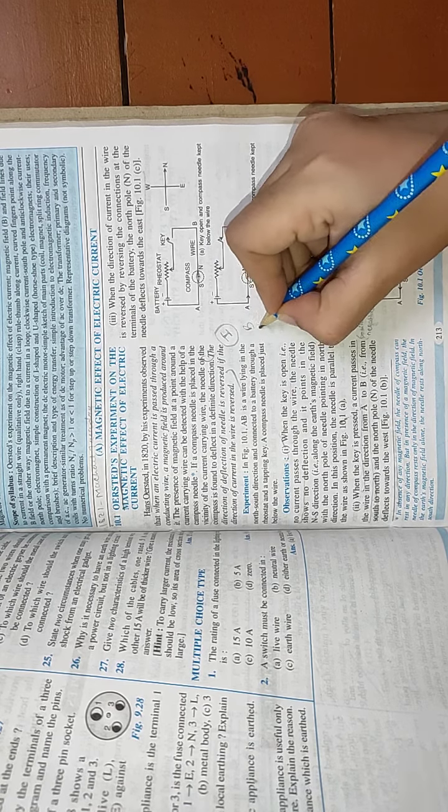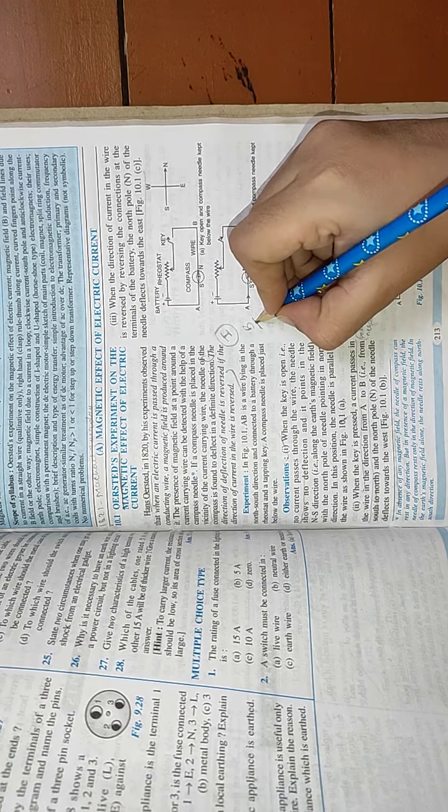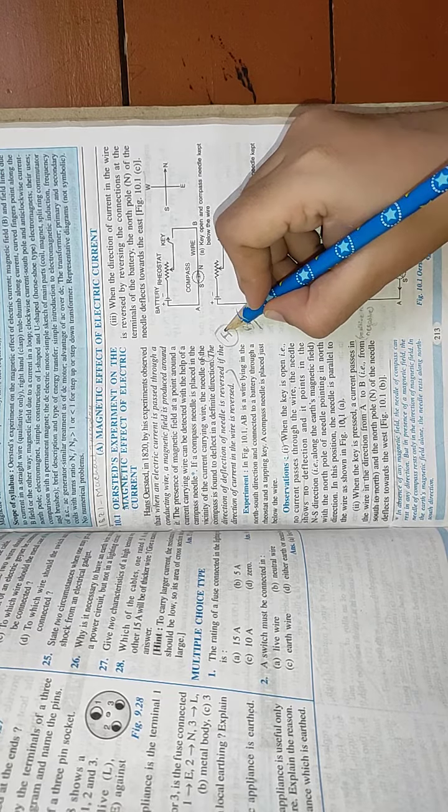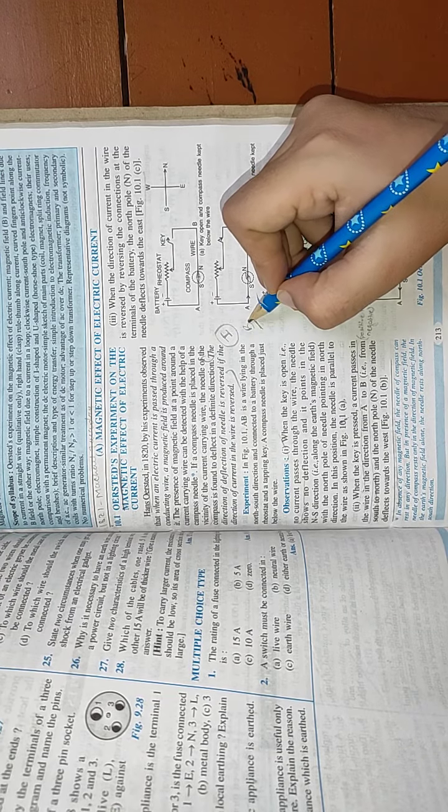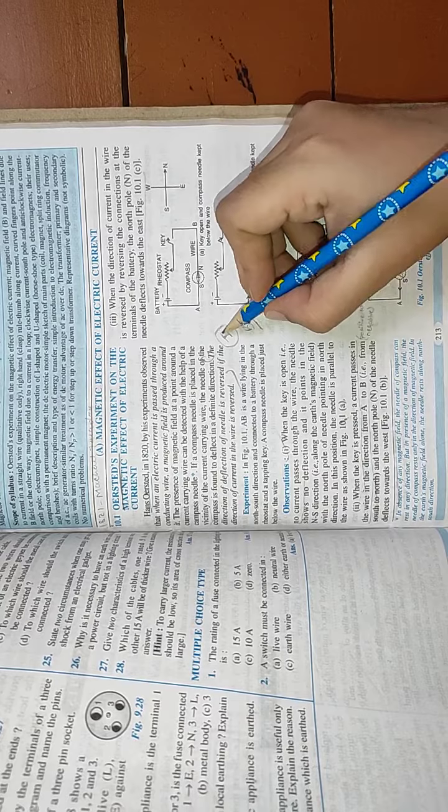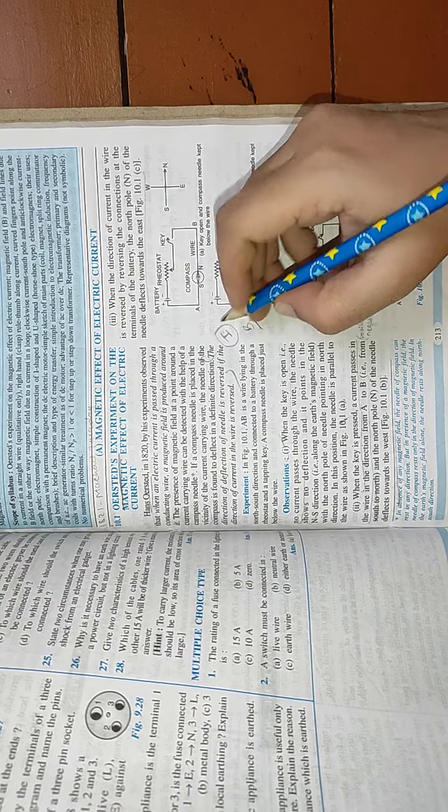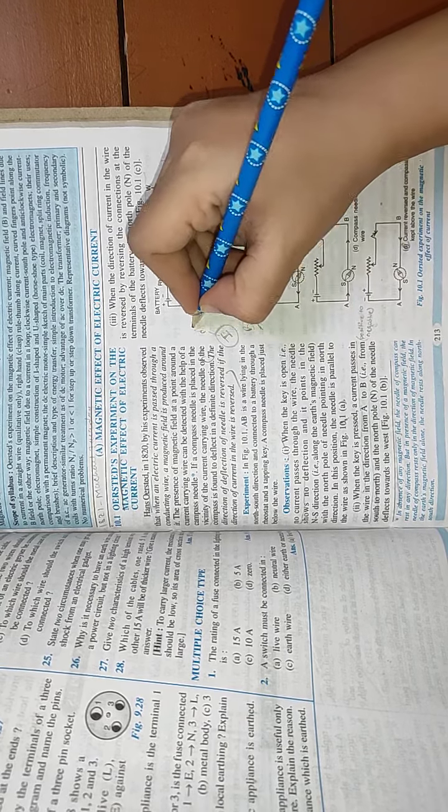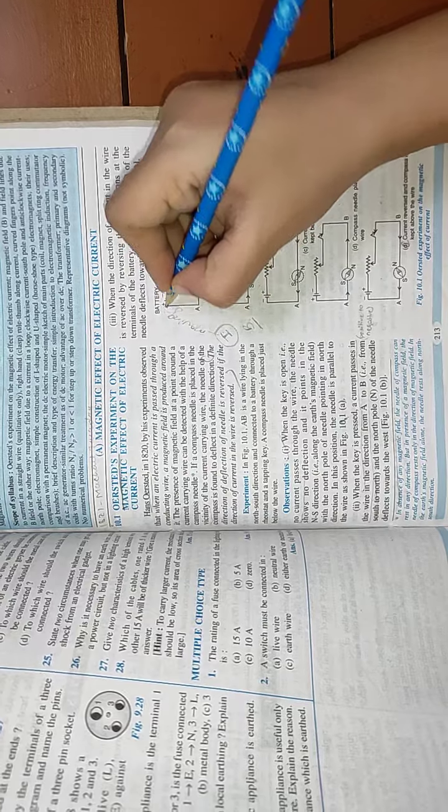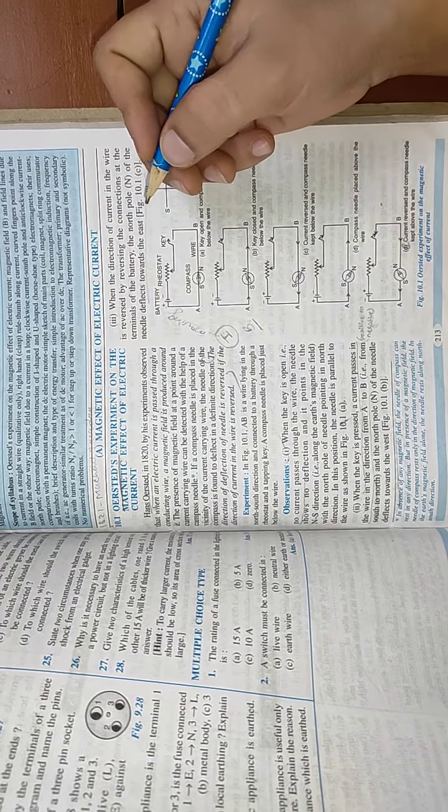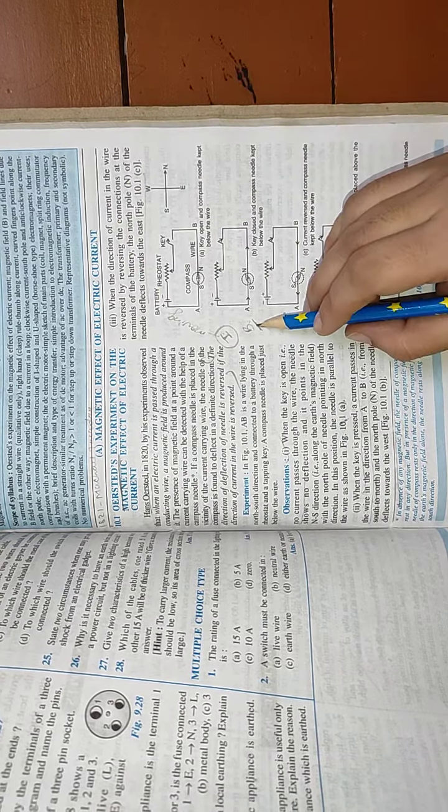Magnetic field is shown by the symbol B. Whenever there is current, that current will produce a magnetic field around it. But when will this current produce magnetic field? When this current is moving. So moving current or moving charges produce a magnetic field around it.